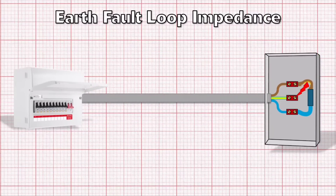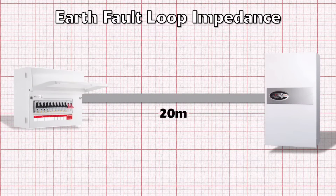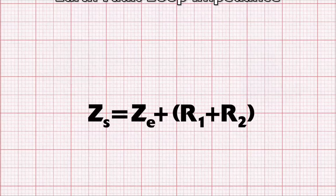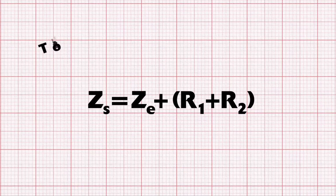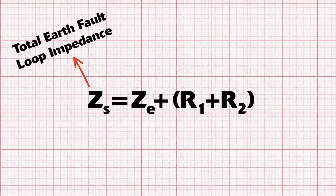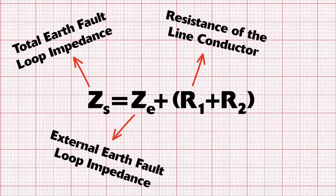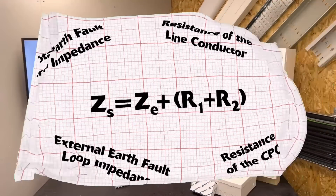In our electric boiler circuit that's simple because there's only one load. To calculate earth fault loop impedance we use the formula: ZS = ZE + (R1 + R2). ZS is the total earth fault loop impedance we're trying to find. ZE is the impedance of the earth fault loop path external to the building. R1 is the resistance of the line conductor and R2 is the resistance of the CPC. Combined, these give the total impedance of every part of the earth fault loop path.